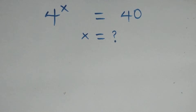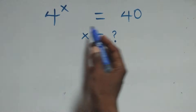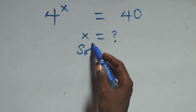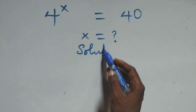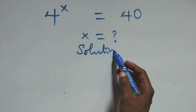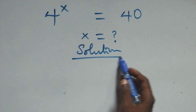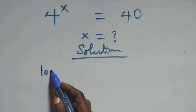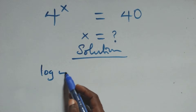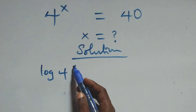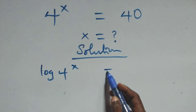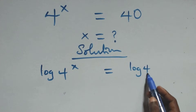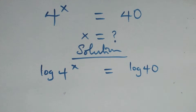Hello, you're welcome. How to solve this nice exponential equation — solution from scratch. What we have here, we take the log on both sides. Here we have log 4 raised to power x equals to log 40 on this side.